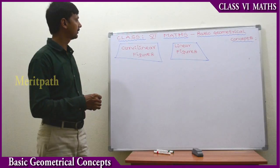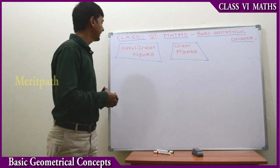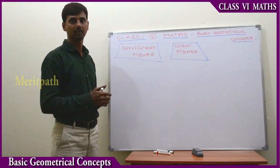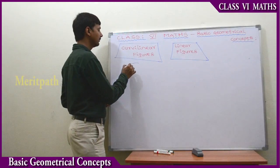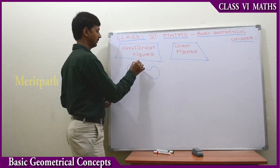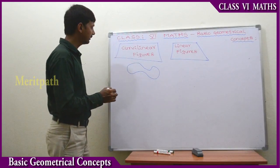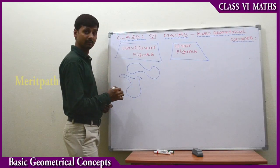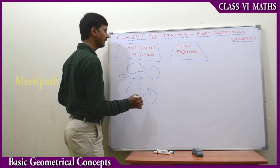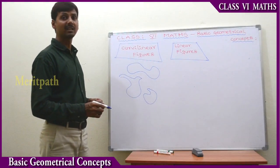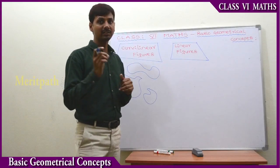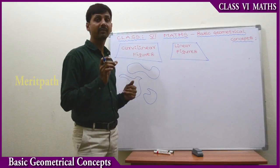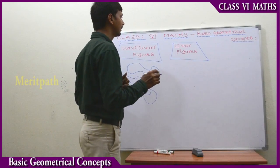These are the basic geometry concepts. Let's see one of the concepts — curved linear figures and linear figures. The figures drawn with curves we call curved linear figures. Linear means straight — so we draw a figure with line segments and we call it a linear figure.